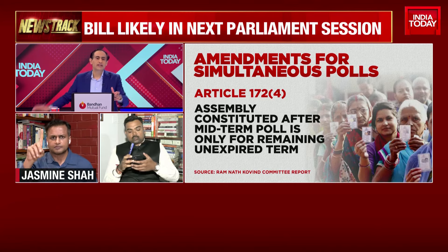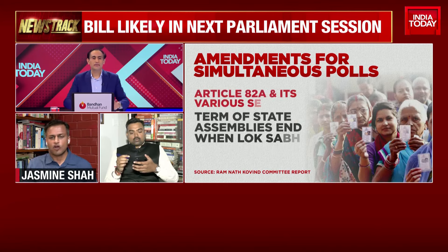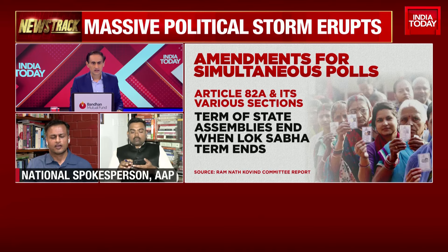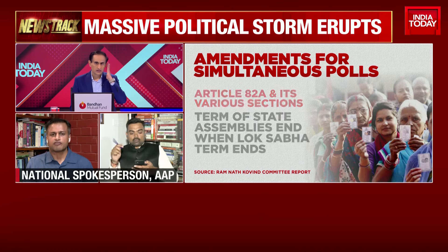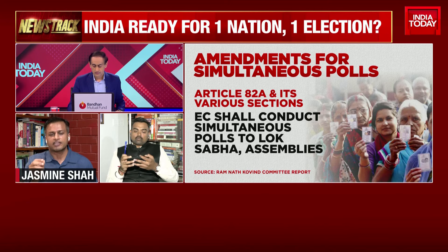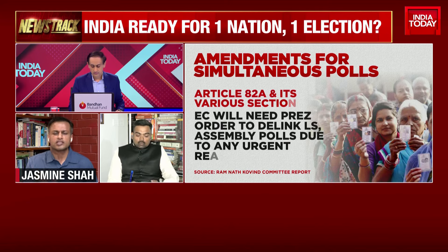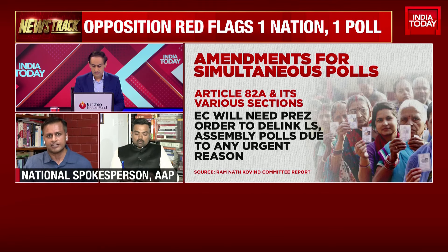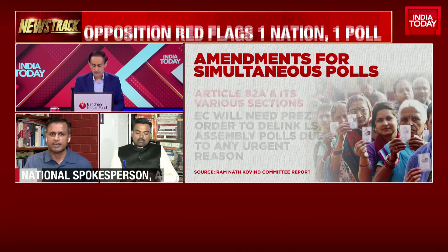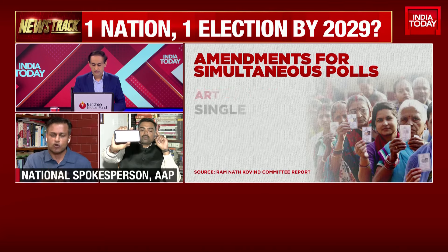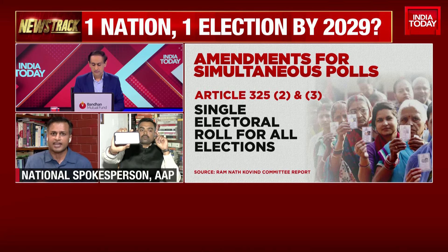Why are you citing the possibility of the exception and making that your principal argument? That may happen in the odd case — it won't happen in 28 cases. In a parliamentary form of democracy, the entire structure lies on having the confidence of the house. Numerous times, houses have not given confidence and governments have fallen at the centre as well as at the state level. It's not once-in-a-generation — it probably happens once every one or two years.